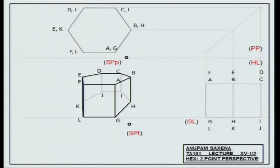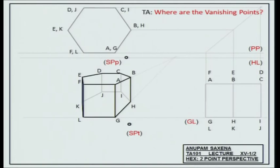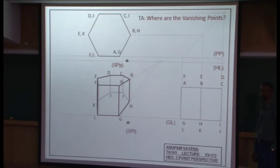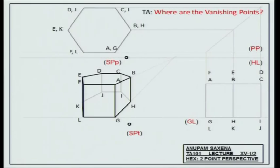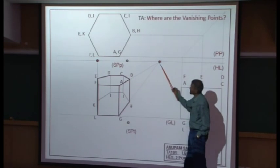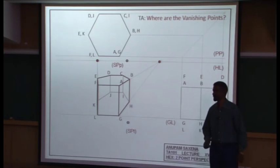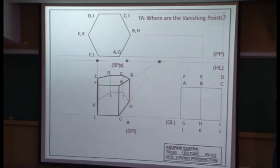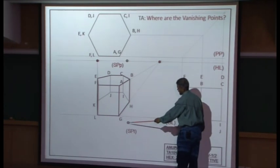Joining these vertices gives a hexagonal prismatic solid without vanishing points — a very logical and reasonable method. To verify, the vanishing points must lie on the horizon line, and indeed they do: the right vanishing point is here and the left vanishing point is over here. A ray through SPT and the right vanishing point is parallel to AB, and a ray through SPT and the left vanishing point is parallel to the other set of edges.